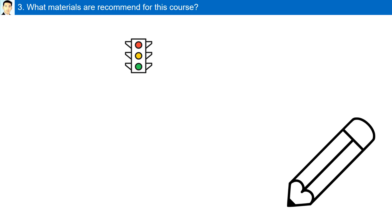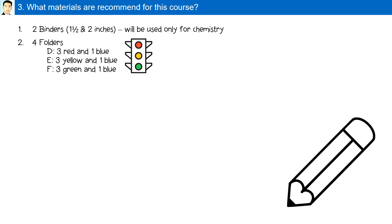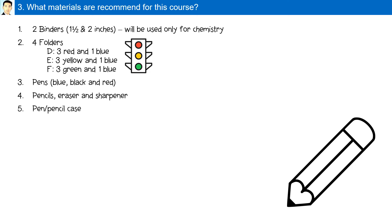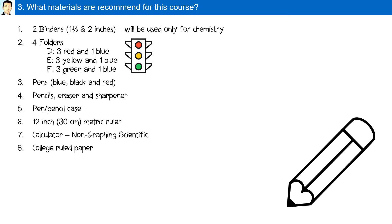What materials are recommended for this course? Two binders, four folders — the colors depend on whichever class you're in — pens of different colors, pencils, eraser, sharpener, a pen and pencil case, a 30cm metric ruler, a non-graphing scientific calculator, college ruled paper, index cards, and a splash-proof goggle.